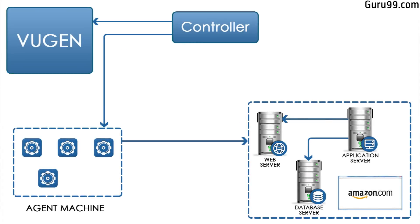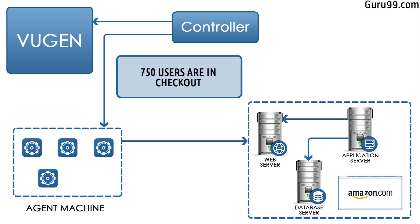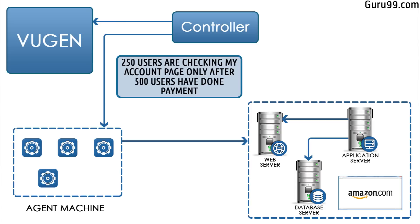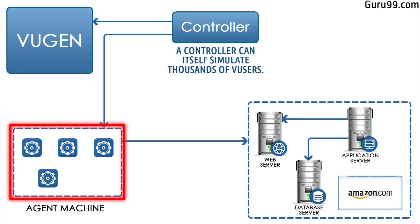Taking from our Amazon analogy, an example controller will add the following controls: 3,500 users are surfing the products page, 750 users are in checkout, 500 users are performing payment processing, and 250 users are checking their My Account page only after 500 users have completed payment. Note that a controller can itself simulate thousands of VUsers, but VUsers consume hardware resources like processor and memory. Hence, using load generators is recommended.